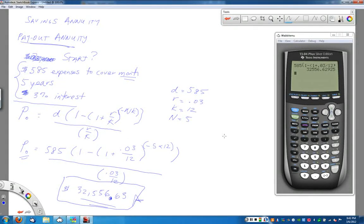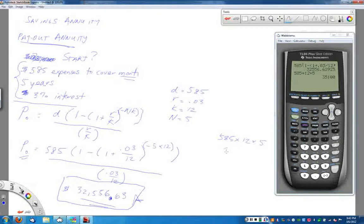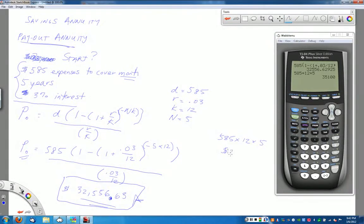Sometimes the question will ask you some follow-up problems just like before. One of the questions is how much money total would you need to pull out of the account? Well, keep in mind that we're taking $585 out every month for five years, so we can do 585 times 12 times 5 to see how much money we actually pull out. And if we do that, we realize that we actually managed to take out $35,100.